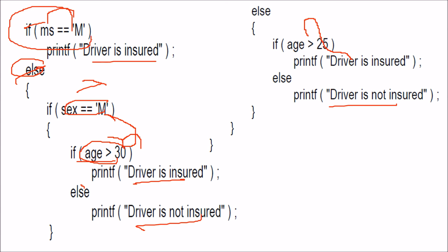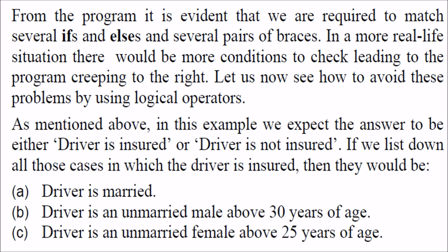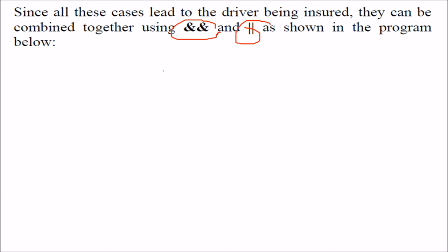So, if this condition fails, that means the driver is female, that is why we come here. Now, this again has various braces and various indentation. Can we put some logical operators into use so that we can rewrite this program? Let us write this program in other terms, and here let us make certain cases. The cases are: the driver is married, driver is unmarried male about 30 years, driver is unmarried female about 25 years. So, we have three cases in all.